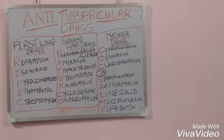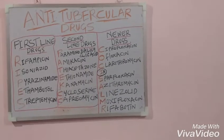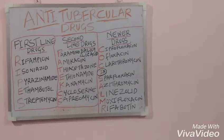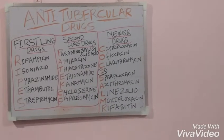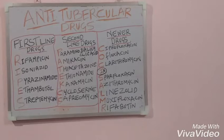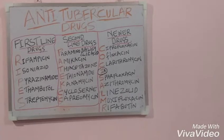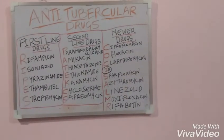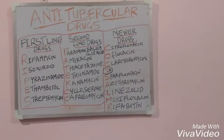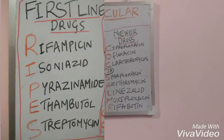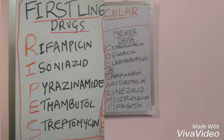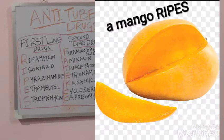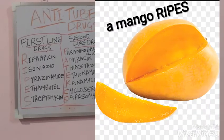Today I will be talking about the mnemonics for anti-tubercular drugs. As you can see, we have the first line drugs, second line drugs, and the newer drugs. In the first line drugs we have RIPES. The short form for first line drugs is RIPES, in the same way as a mango RIPES.